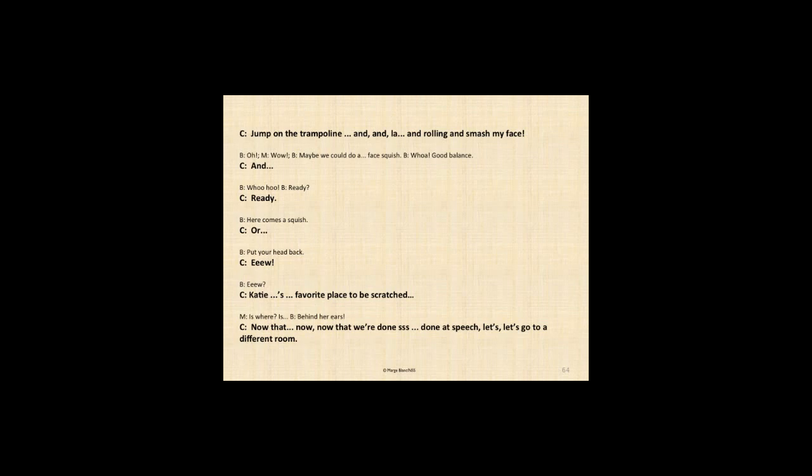So Mara says, trying to think that perhaps he will finish his sentence until where he wants to be squished. Mara says, is where? Mara is recognizing that he's not going to finish that sentence. Brynn jumps in and says, behind her ears. Kind of like what a kitty would want. So Cameron has given up on us. So he says, now that we're done at speech, let's go to a different room. So the kind of gestalt quality there is that this is speech. We're done with speech. Not so much that he means that literally, like he's going to leave and go home, but it's kind of a gestalt quality to not having all of the ways of saying what he wants to say at that moment.